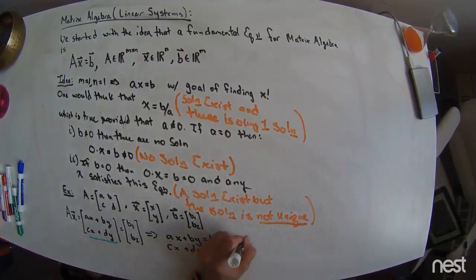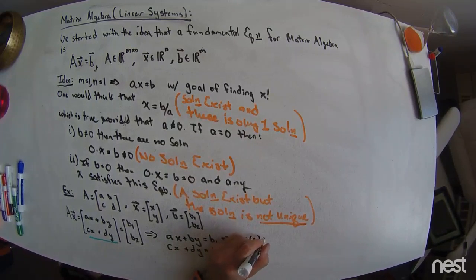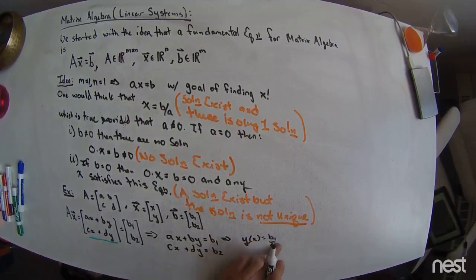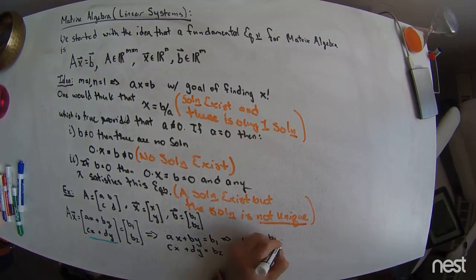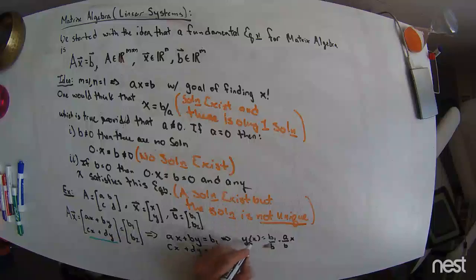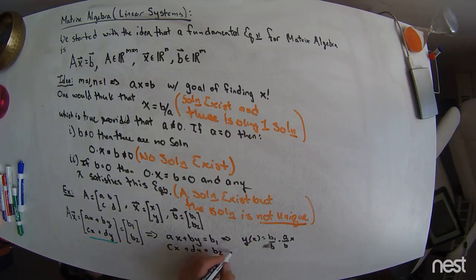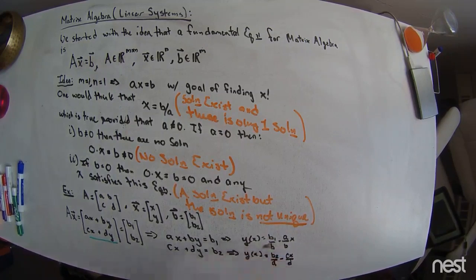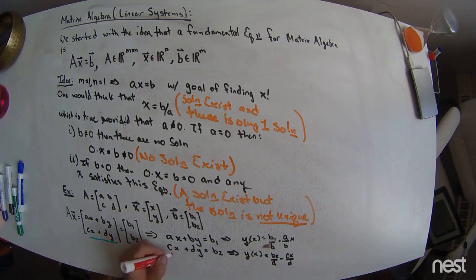Or y of x equals b1 over B minus A over B times x. Another equation for y is going to be y equals b2 over D minus Cx over D. And so what we see here is that these are the equations of two lines.